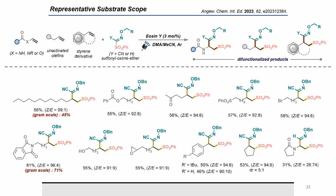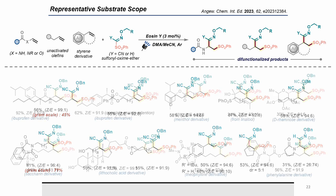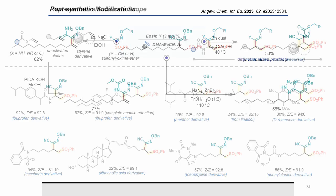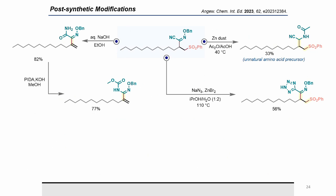Moreover, replacing the cyano group with hydrogen, the reaction also furnished the desired product. The synthetic utility of the process was established through derivatization of bioactive molecules like ibuprofen, menthol, linalool, saccharin, lithocholic acid, theophylline, and phenylalanine. To further highlight synthetic utility, the product from 1-dodecene was transformed to different valuable materials: an alpha-oxime primary amide via partial saponification, an amidooxime via Hofmann rearrangement, and an unnatural amino acid precursor by zinc reduction.